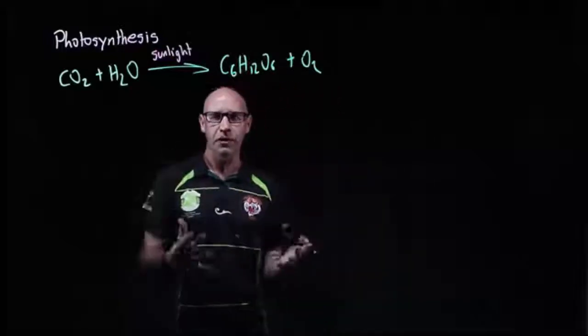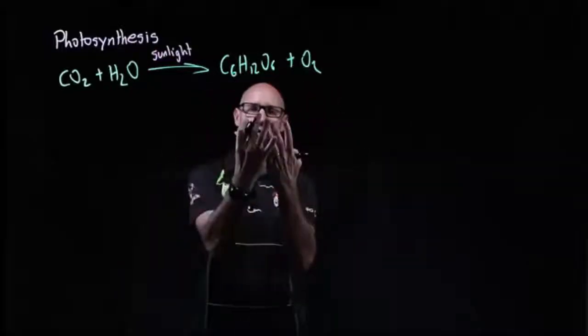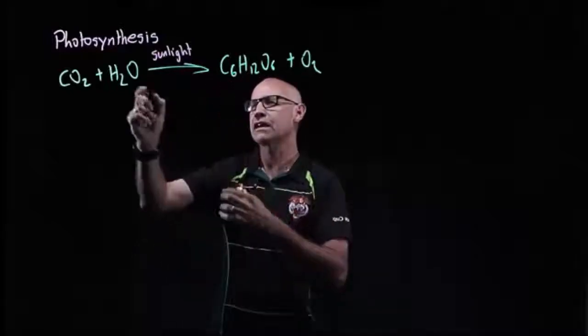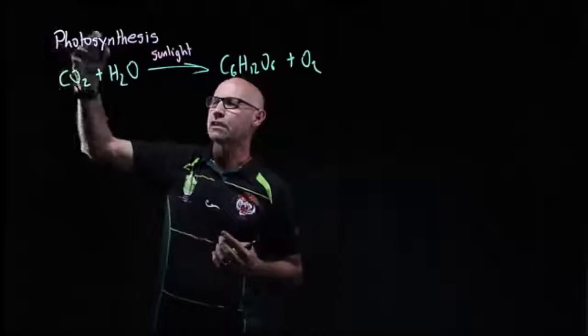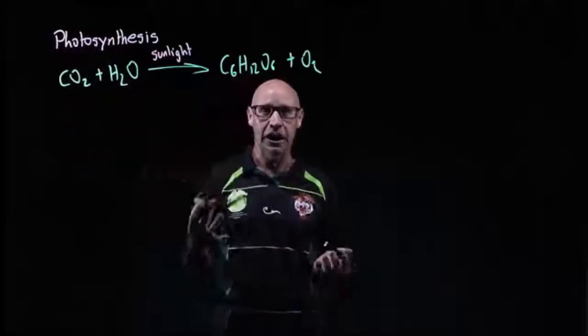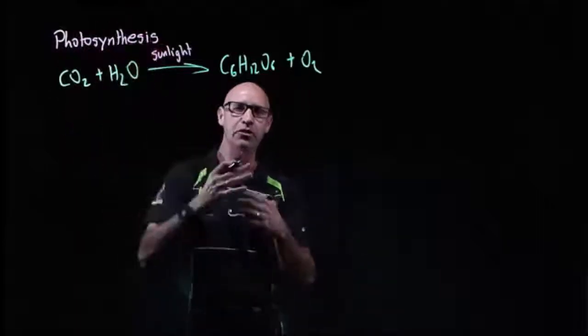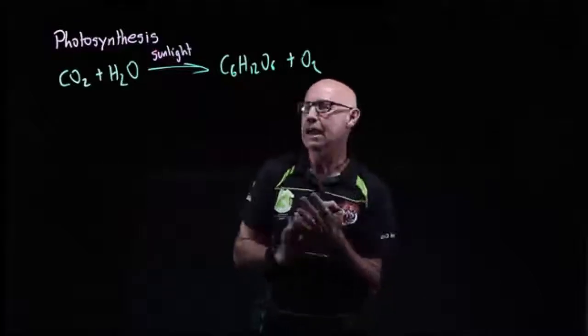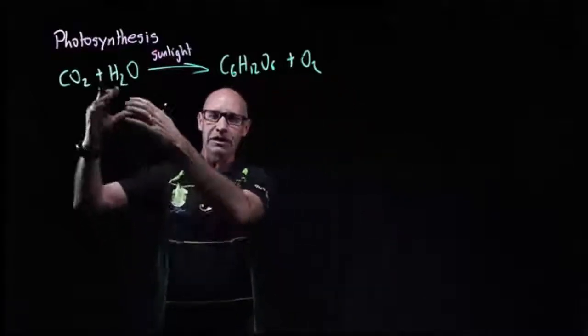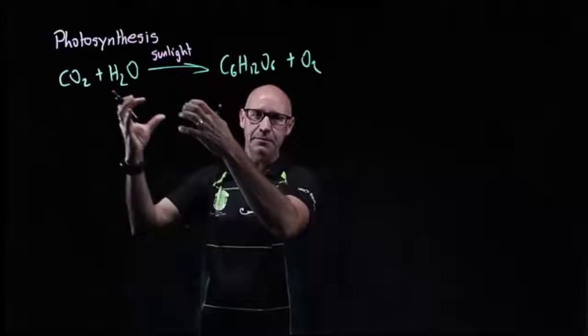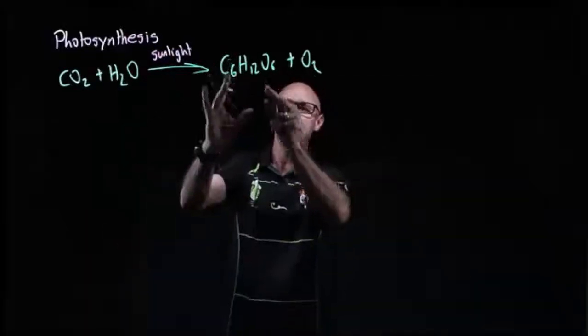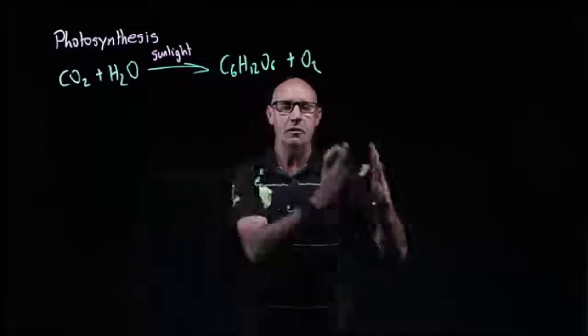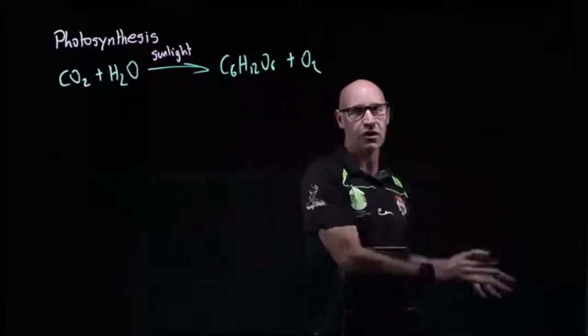The point of photosynthesis is to be able to produce organic material. It's synthesis, which means building, using photo, meaning light. So using light to build organic material. It's the process of fixing carbon, taking carbon out of the atmosphere and putting it into an organic source. That then becomes an energy source to power all of the processes of life.